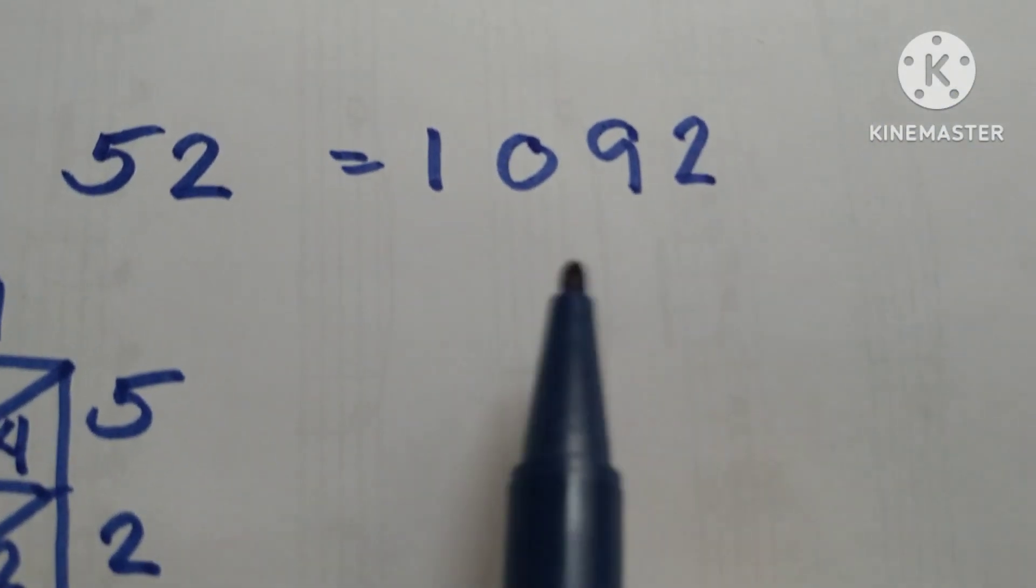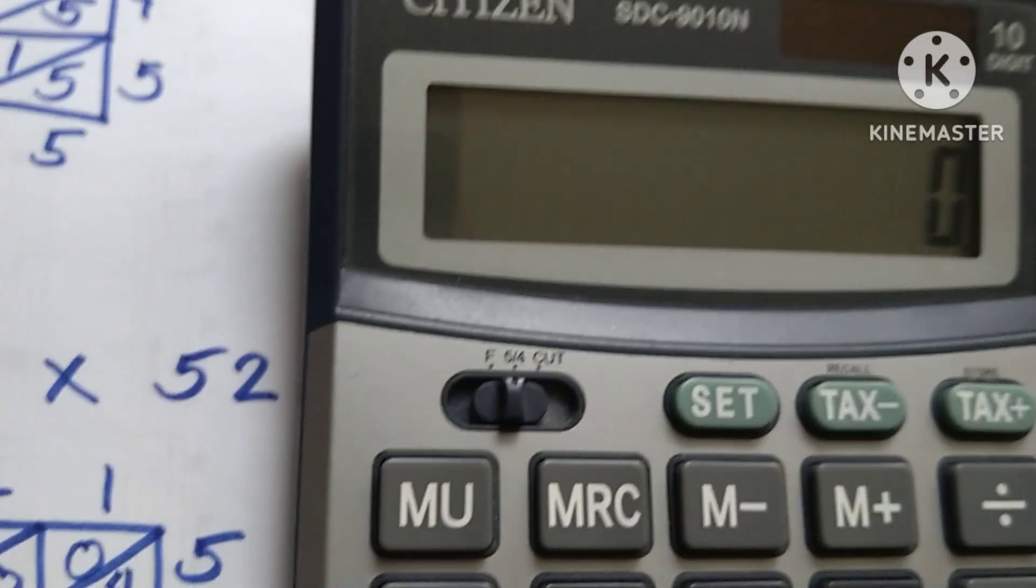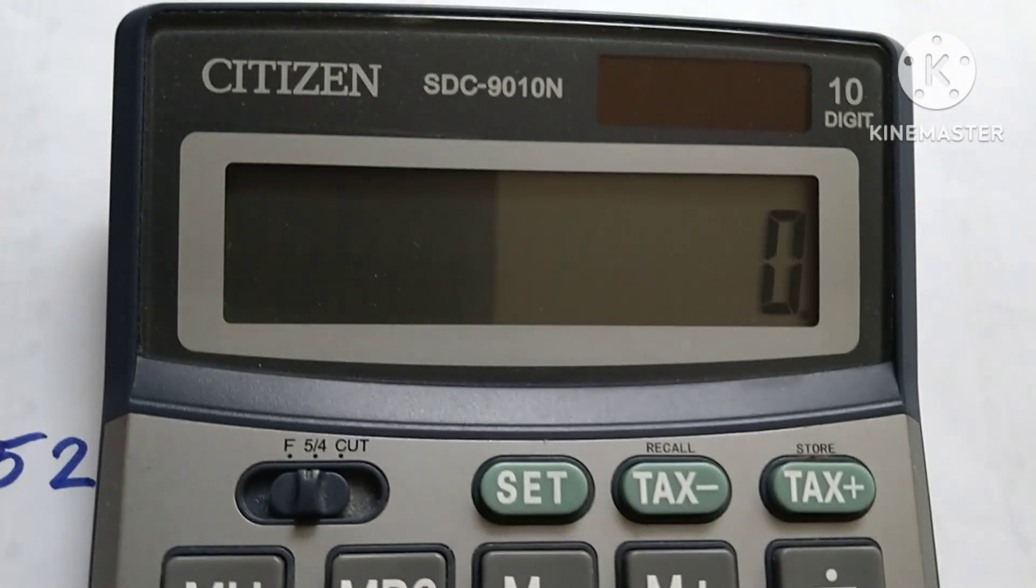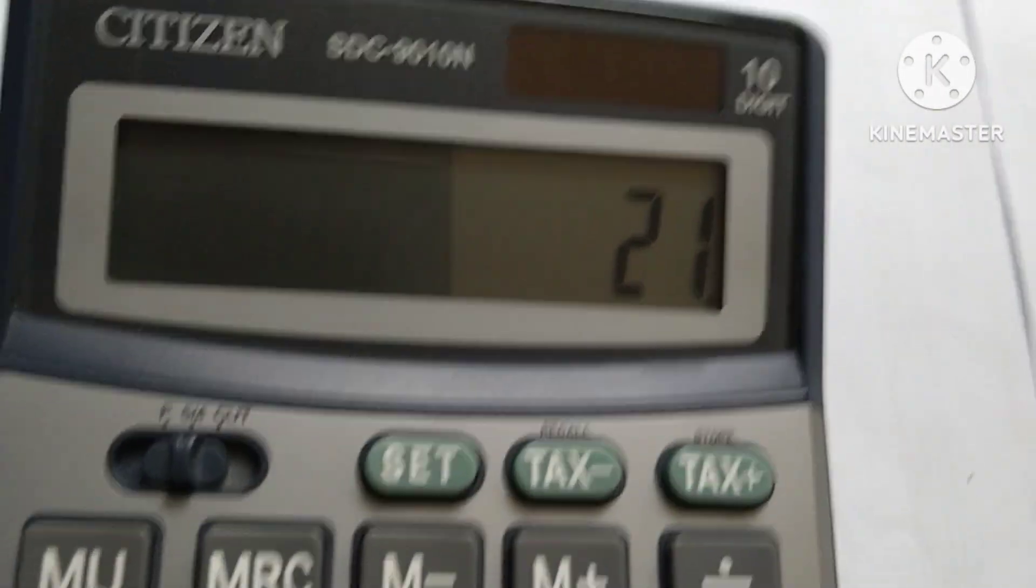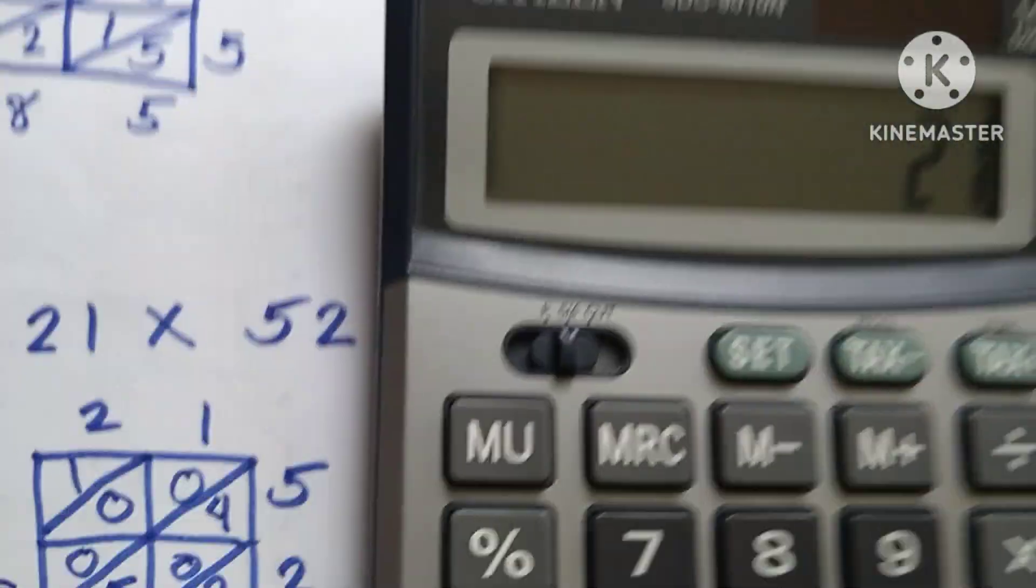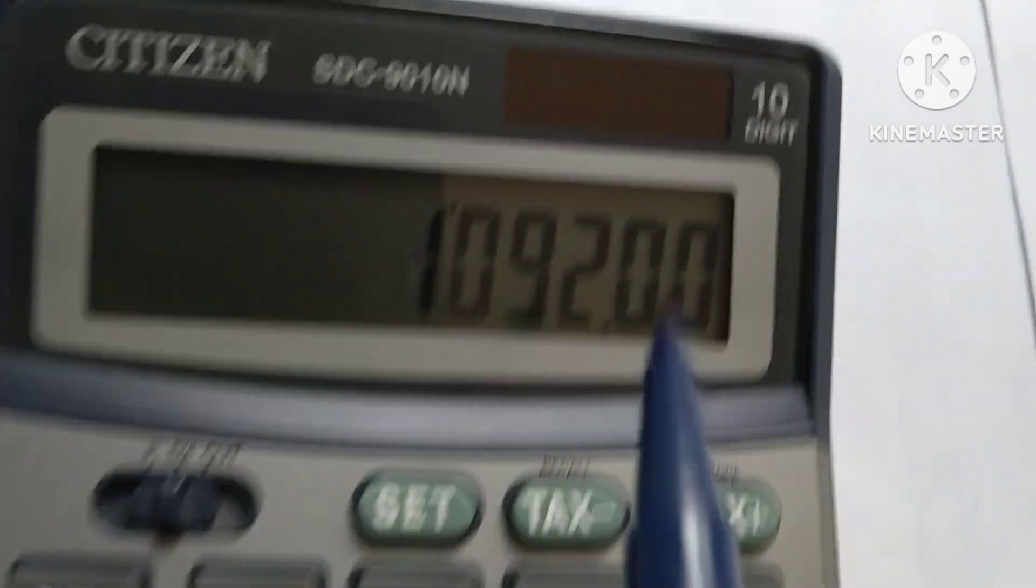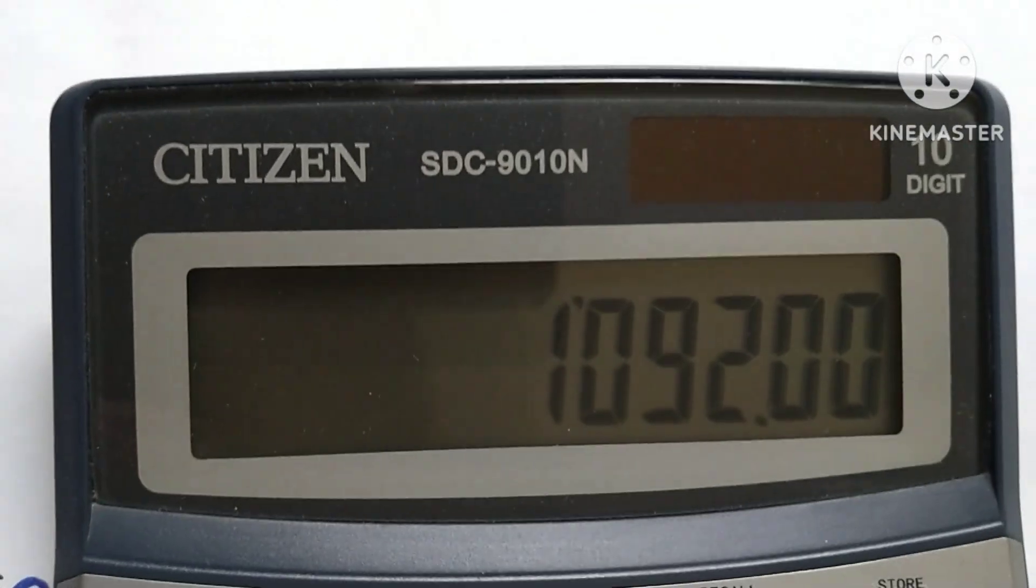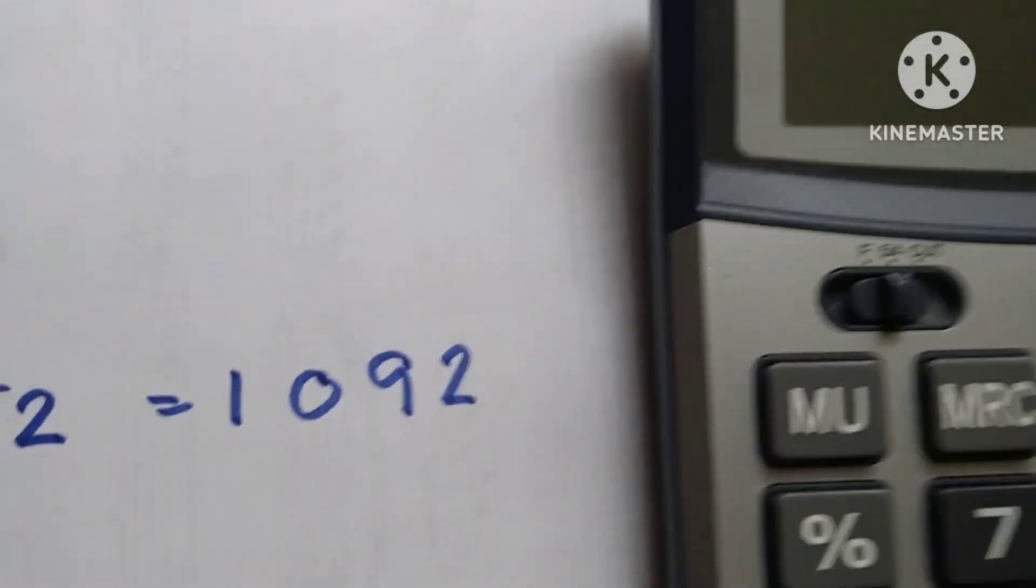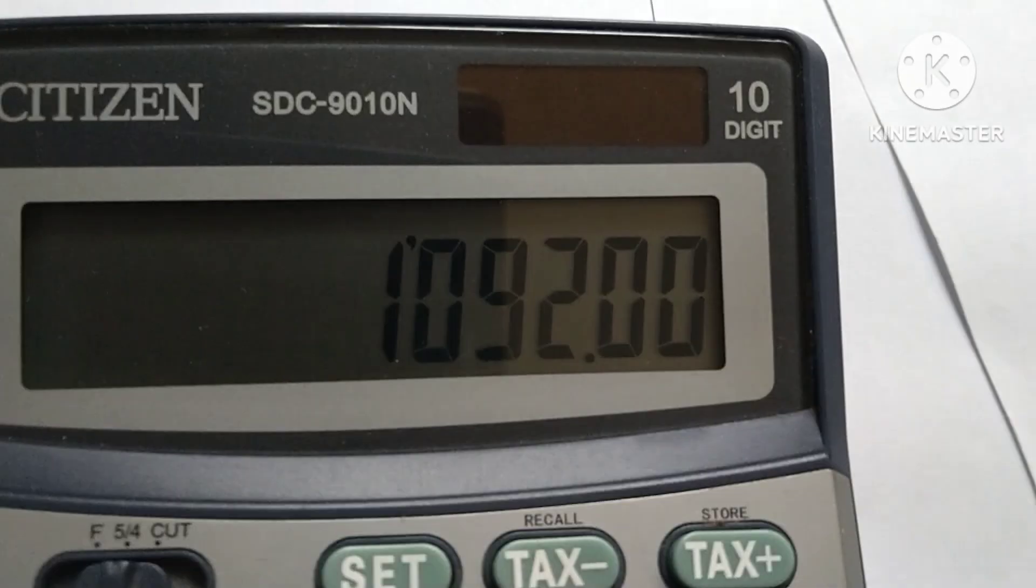We check it out using the calculator: 21 times 52. The answer is 1092, and our answer is 1092. This is proof that this very easy trick really works.